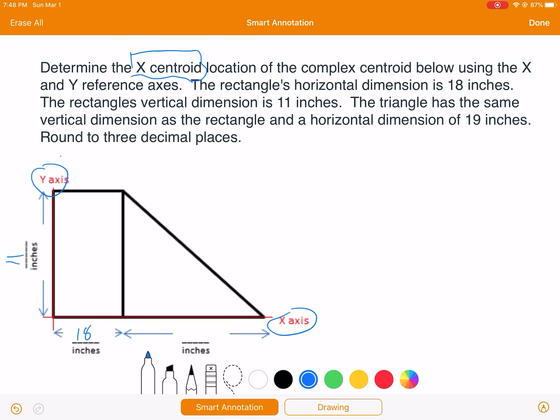So to solve for this, the x bar will be equal to the sum of the xi times A's divided by the sum of the areas. What is the sum of the xi A's? It means the centroid in the x times the area of that shape. So I have shape one and shape two, so x1, x2 times the areas of them.